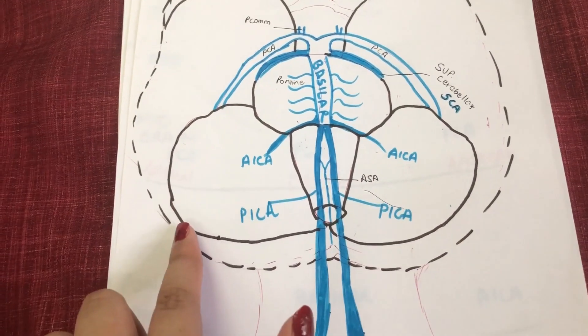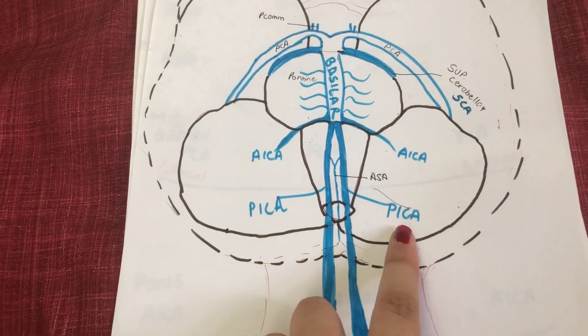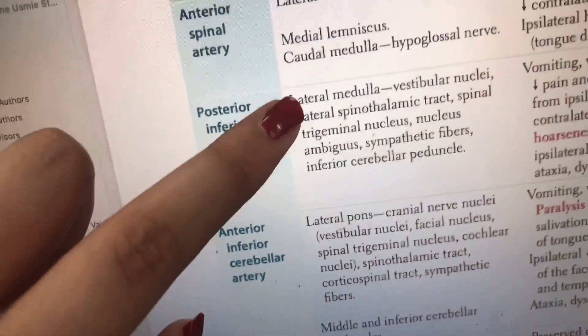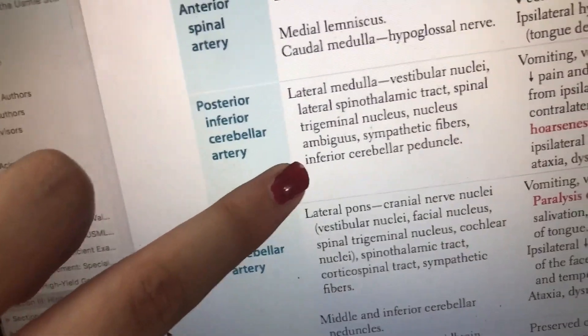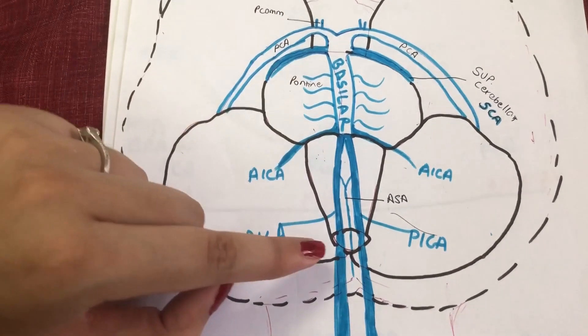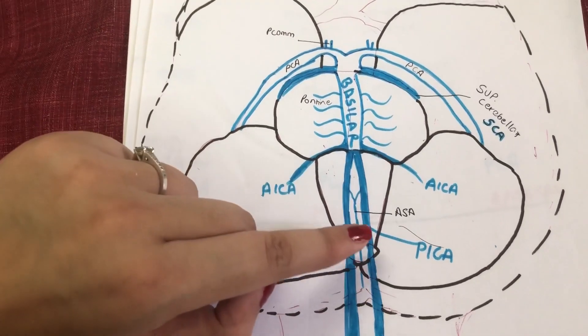A lesion in PICA should affect the lateral medulla and the inferior cerebellar peduncle. Great, so we have the area down. Now as these arteries move upwards, they give rise to another artery known as the ASA.